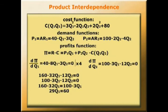So 29Q1 = 60. So Q1 solves at 2.069. Remember these quantities are in thousands per week. We've worked out the optimum amount of Q1 to produce.